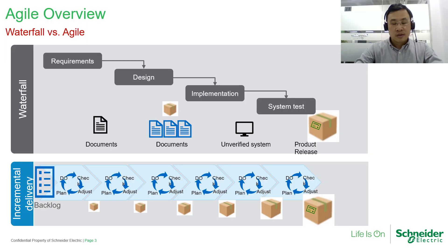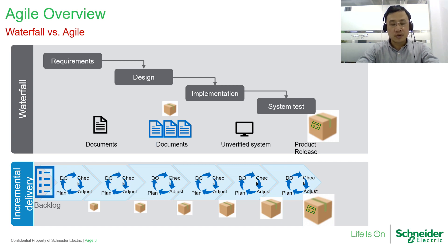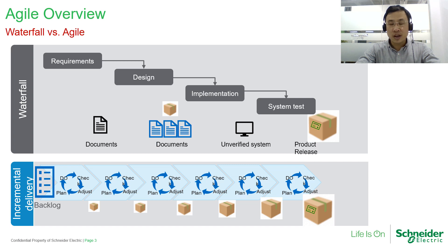This is a comparison between the waterfall model and the Agile model. In the waterfall model, there are typically four stages: requirements definition, design, implementation, and system test stages.